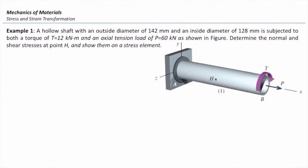Consider this tube, which is subjected to a torque equal to 12 kilonewton-meter and one axial load P which is equal to 60 kilonewtons. We want to determine how much are these stresses at a certain point, point H.